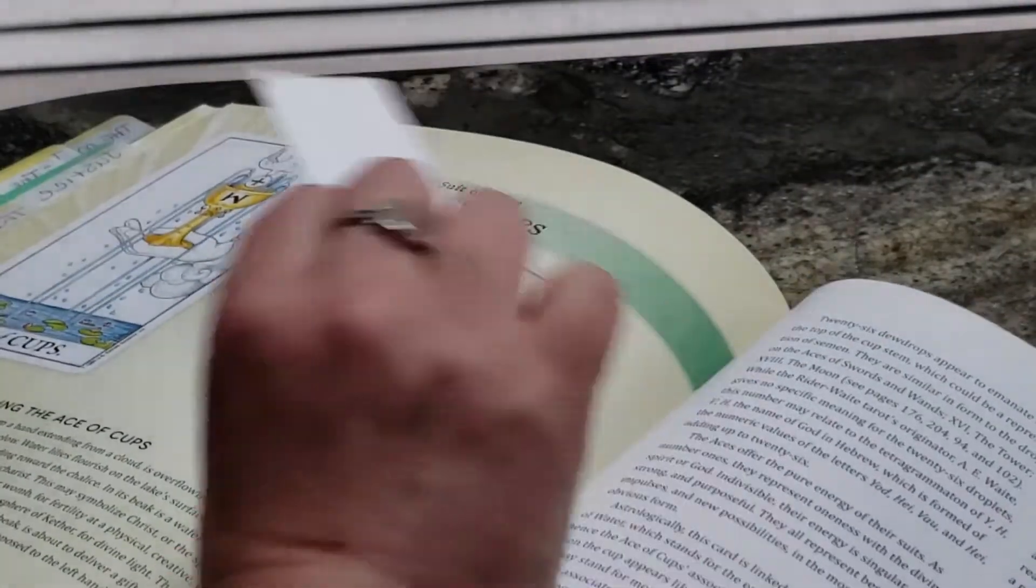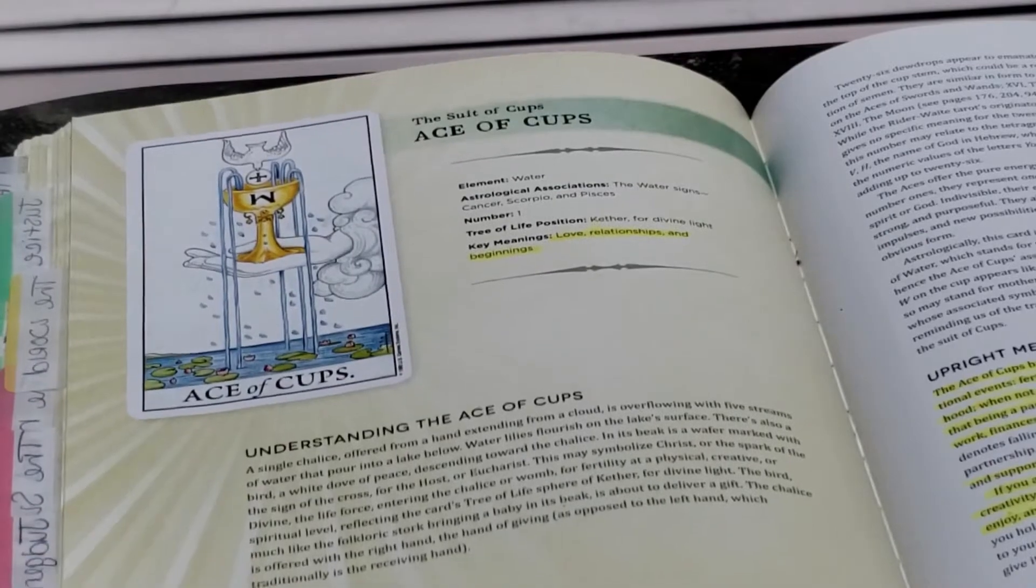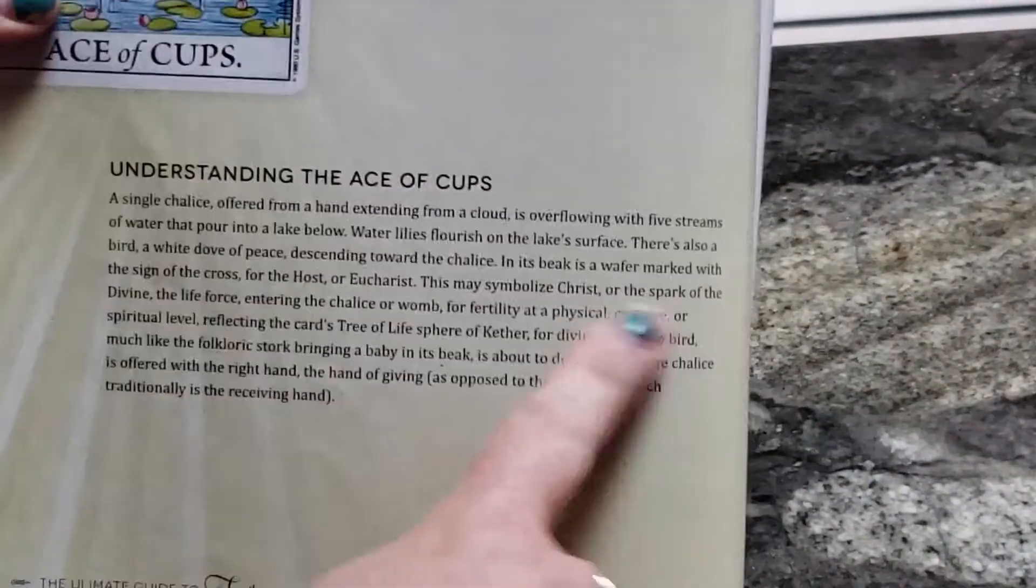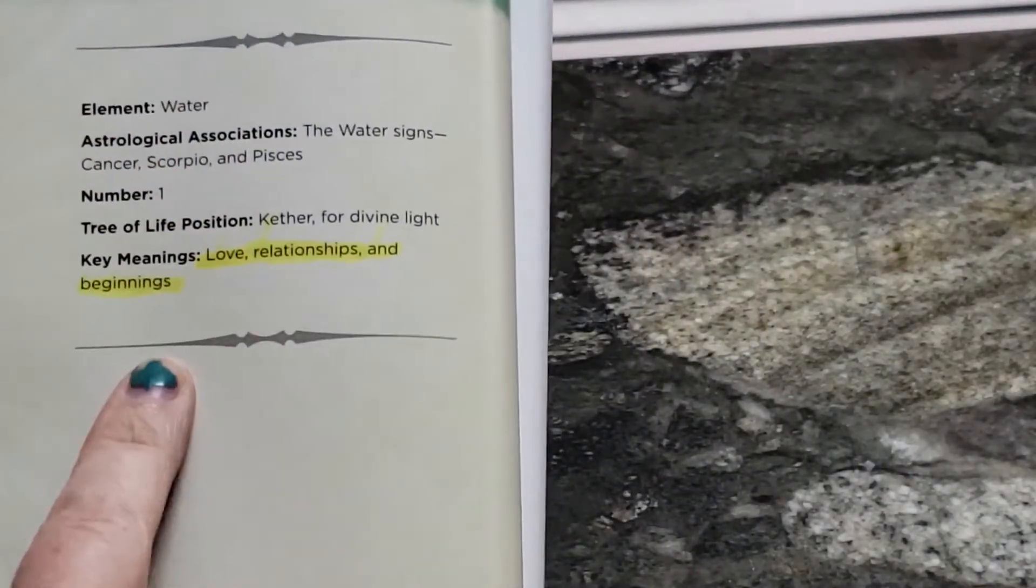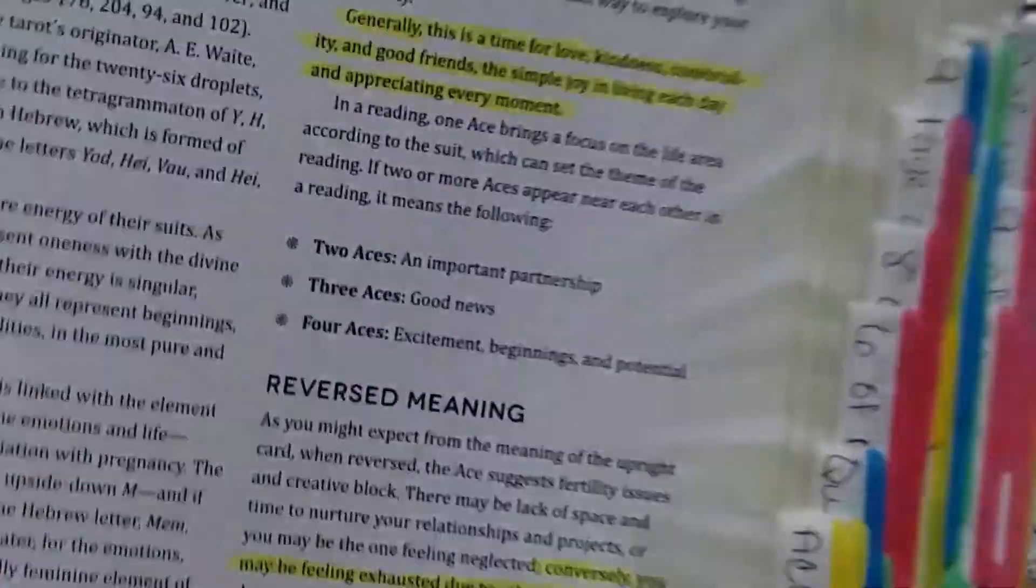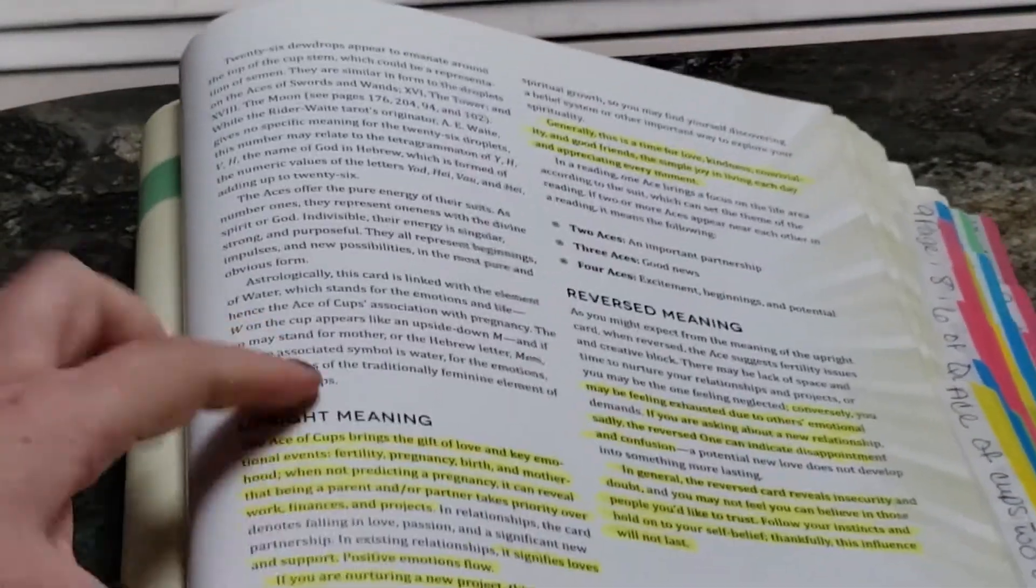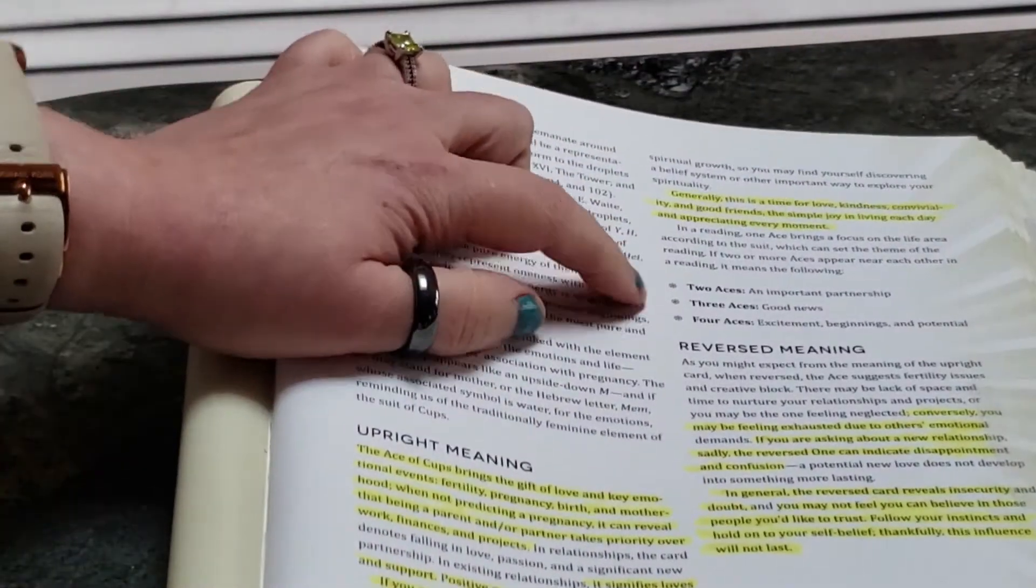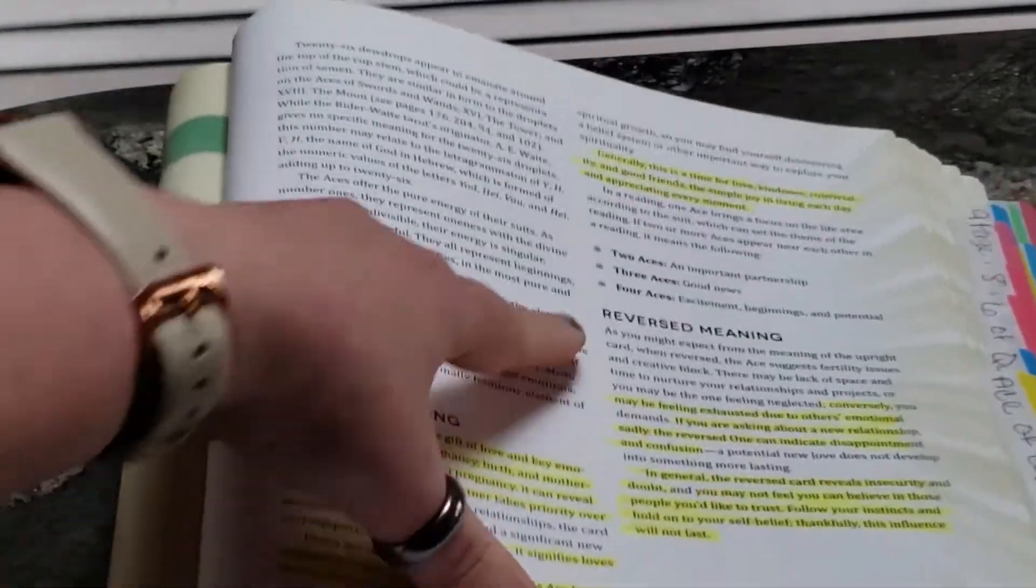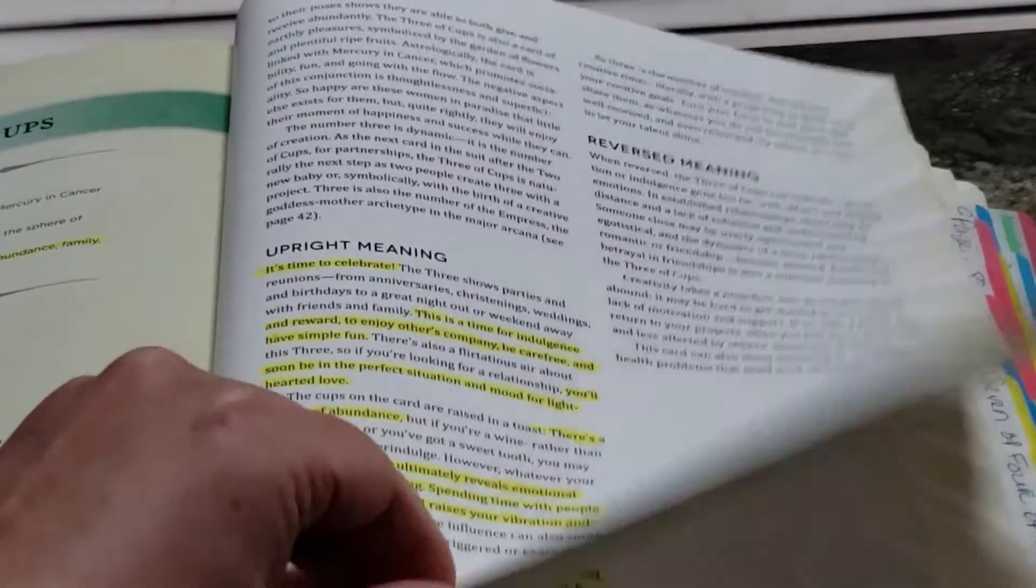And then when we jump to the Minor Arcana, it starts with cups. So we'll look at one of the cups and then we'll look at the court cards. So then it goes into the cups. So we have Ace of Cups. And then it talks about understanding the Ace of Cups right here. And then each Minor Arcana is set up the same way. It talks about the element, the astrological association, the number, the tree of life, and then the key meanings. And then on the flip side, it gets into more of the background of it. Sorry. Sorry. I'm looking at the book and not at the camera. Sorry, guys. And then the upright meaning.